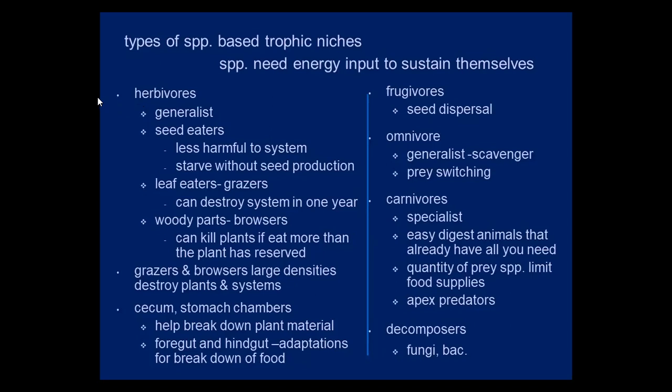You'll have leaf eaters, grazers, and browsers — and these can destroy a system rapidly. Grazers eat leaves; browsers eat woody parts, and they can kill a plant if they eat too much. Large densities of grazers and browsers can destroy plants and systems. That's what we have with a huge population of goats in the chinchilla system — they're not native to the area, they're in higher population than native grazers would be, and they decimate the vegetation.